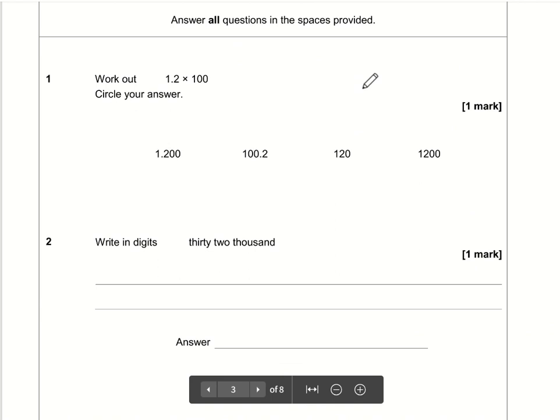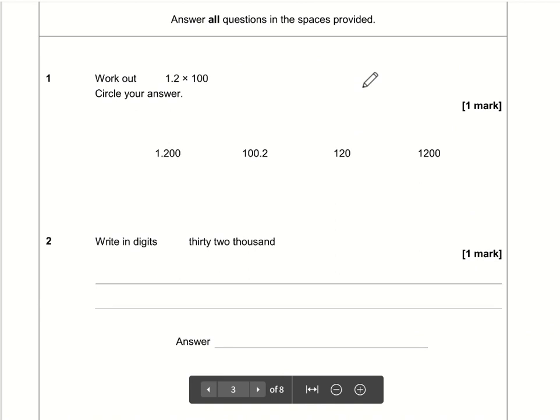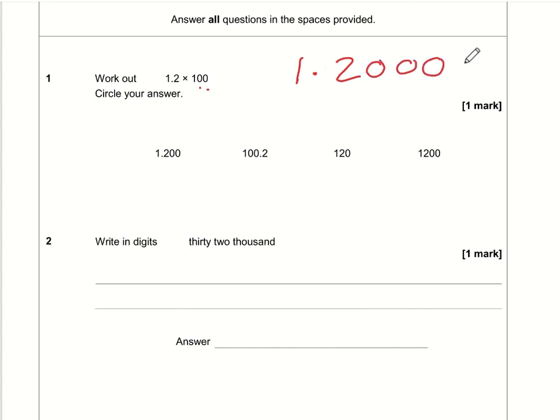Question number 1: 1.2 multiplied by 100. Well, 100 has two zeros, so we're going to be moving the decimal point two positions. To make life easier, if we add some zeros it's more obvious where the decimal point will end up. We're moving it two positions to the right because we want to make the number bigger, so that's going to be 120.